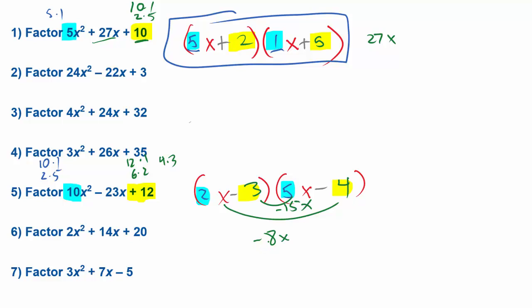And if we check, negative 15 and 8, yeah, that is going to work. That's going to give us that negative 23 in the middle. So I can see here that this is going to be my answer to the problem.